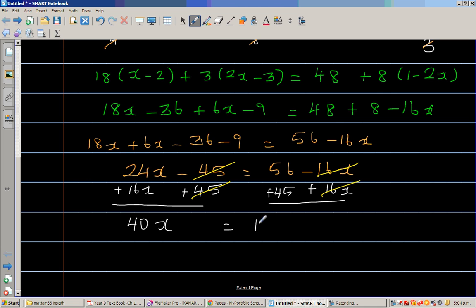40x is equal to 56 plus 45 which is 101. So this implies you're dividing both sides by 40. So x is 101 out of 40.